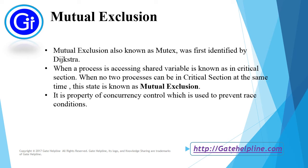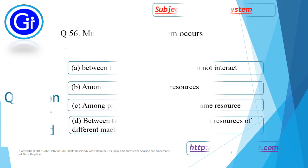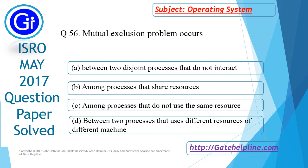It is a property of concurrency control which is used to prevent race conditions. So according to our discussion, the answer to this question is option b — that is, mutual exclusion problem occurs among processes that share resources.